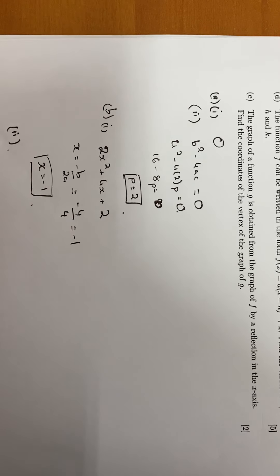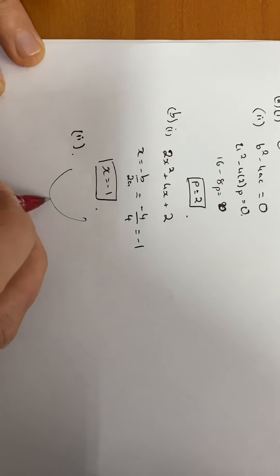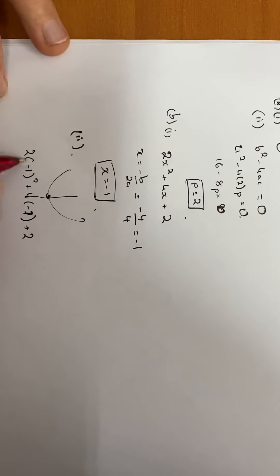Part two, find the coordinates of the vertex. The vertex, this is a quadratic graph, the vertex is going to be at the bottom through the axis of symmetry. We already know the x value, we just have to find the corresponding y value. Substitute that in: 2 times minus 1 squared plus 4 times minus 1 plus 2. That works out to 2 minus 4 plus 2, which is 0. So my point is minus 1, 0.